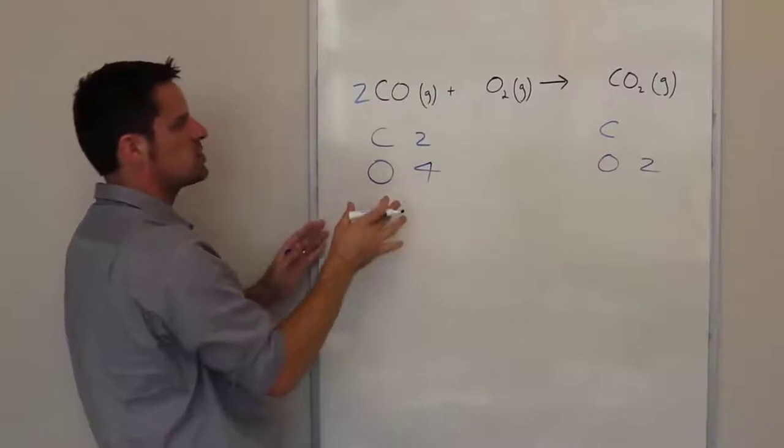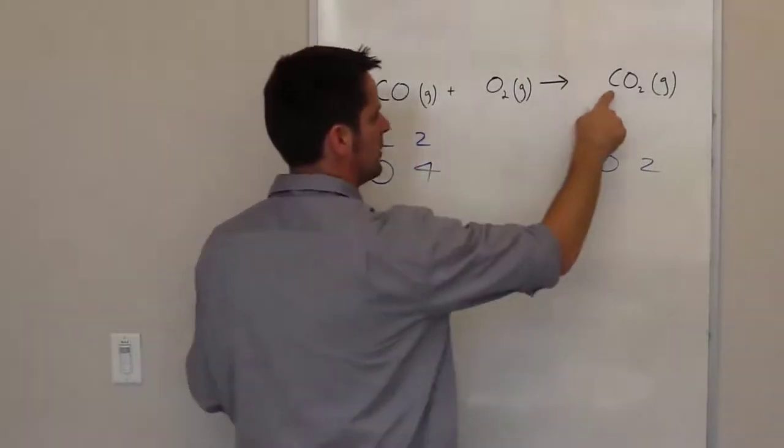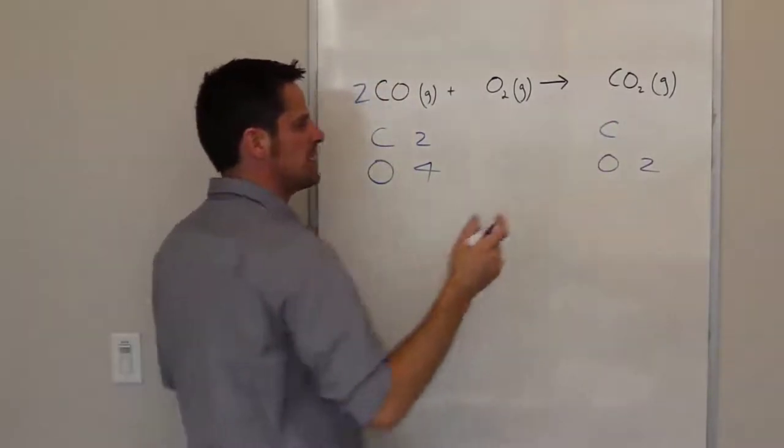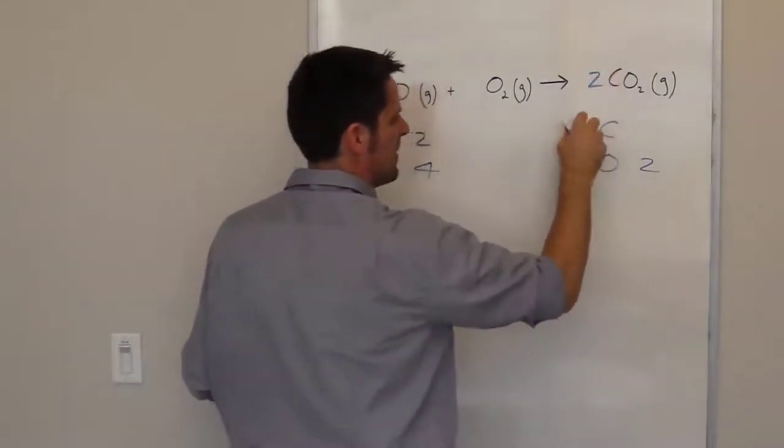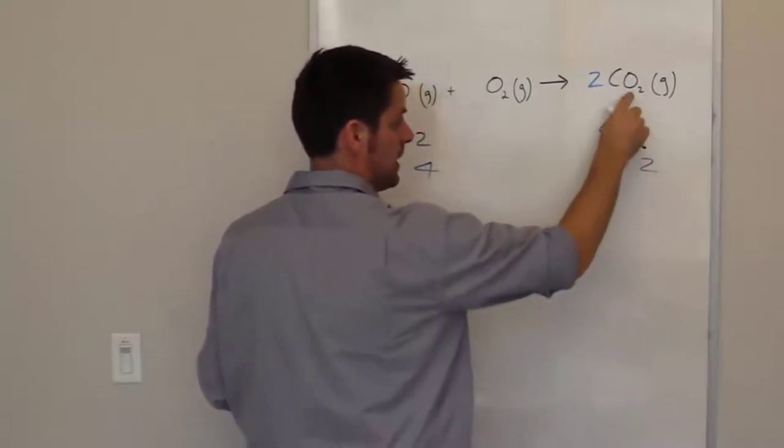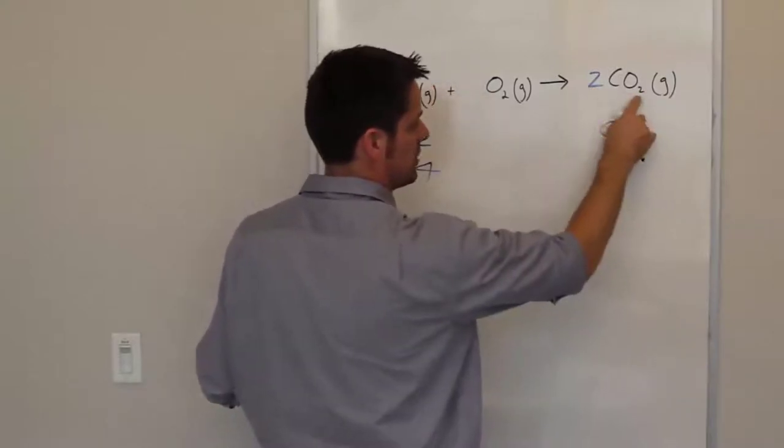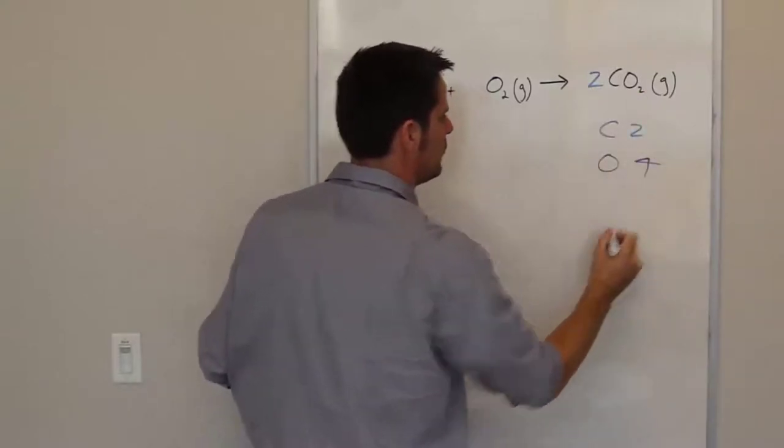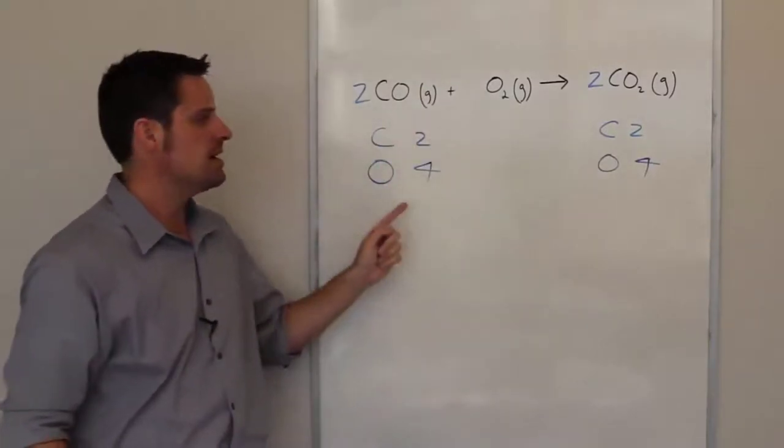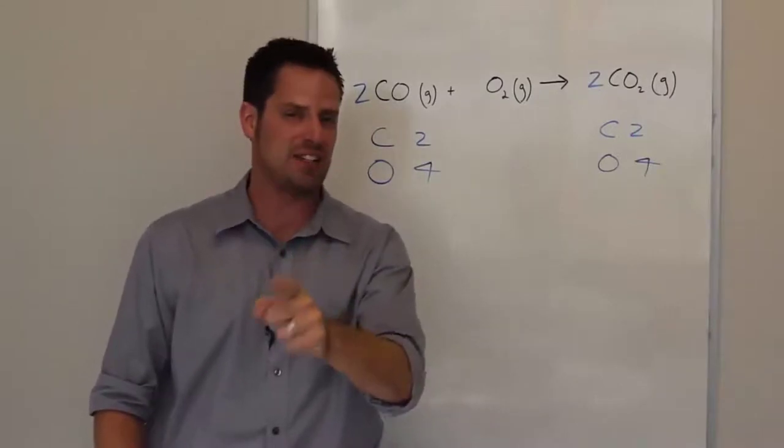Let's take a look at the right. I only have one carbon atom. Can I change that? I totally can. If I put a two right there, now I have two carbon atoms on the left, but it changes the number of oxygen atoms. These twos multiply by each other, so the number of oxygen atoms on the right is four. I now have the same number of carbon atoms and oxygen atoms on both sides, and that chemical equation is stoichiometrically balanced.